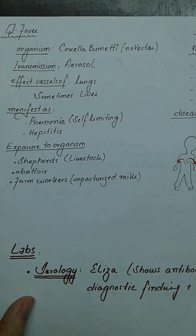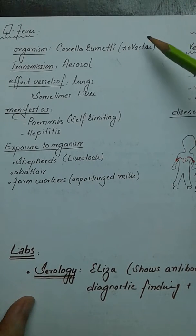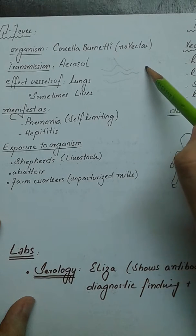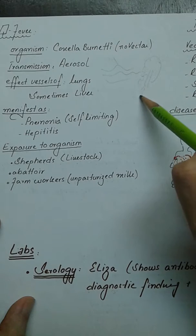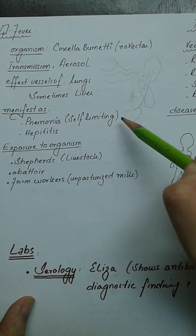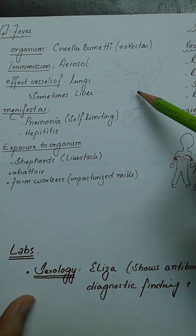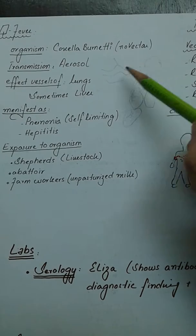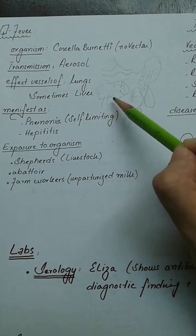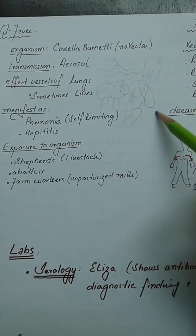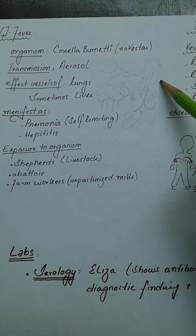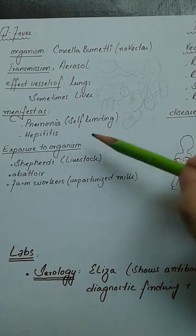Q fever is caused by Coxiella burnetii. This does not need a vector—instead, it is transferred by aerosols. When inhaled, it enters the lungs and causes similar vasculitis and edema. It can also affect your liver, causing hepatitis. In the lungs it causes pneumonia-like symptoms; in the liver, hepatitis-like symptoms. This organism is carried by specific animals—sheep. The patient must be a shepherd treating livestock, or could be a butcher in an abattoir, or farm workers dealing with unpasteurized milk.